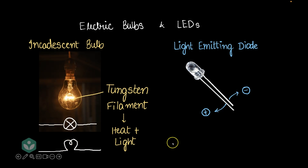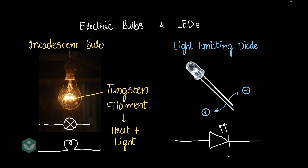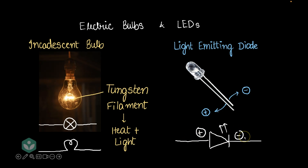Now, how do we draw the LED? This is how you draw the LED. You can pause for a moment and try to draw it on your own so that it registers. This side is the positive side, and this is the negative side of the LED in the circuit diagram.